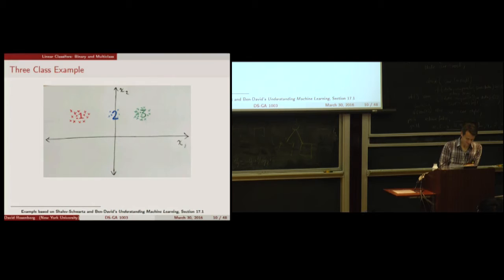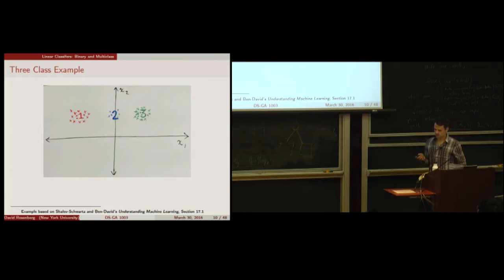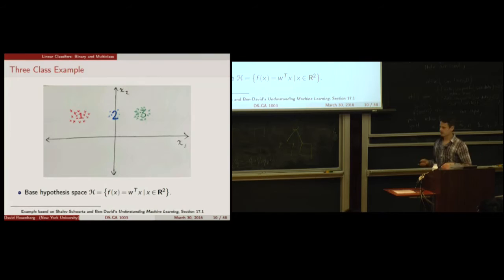Let's consider a three-class example with three classes, drawn with little Xs. Let's see what we can do with the one-versus-all classifier. First, let's specify our base hypothesis space — in this case, linear classifiers W transpose X, with no bias term. Importantly, because there's no bias term, the separating hyperplane will always go through the origin.